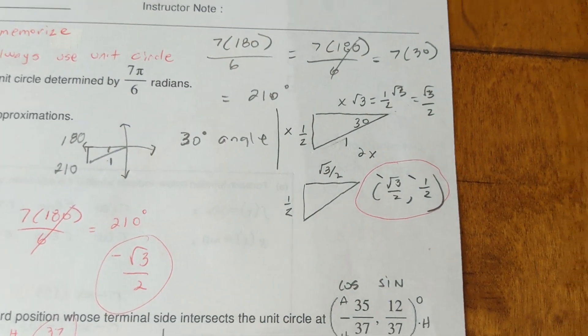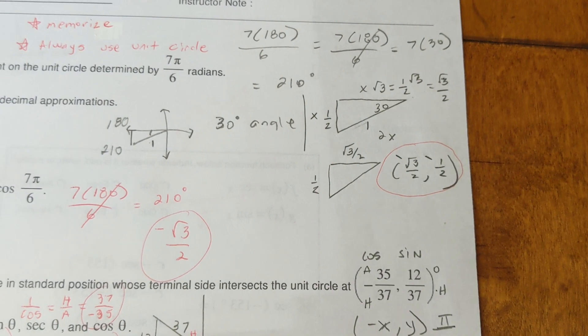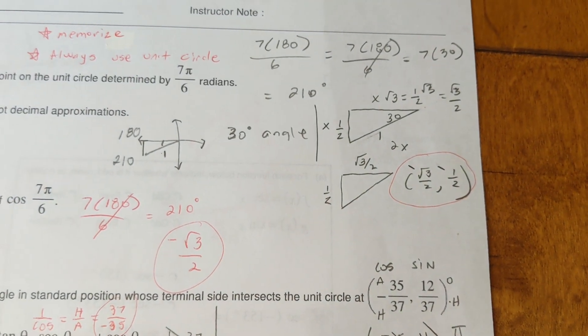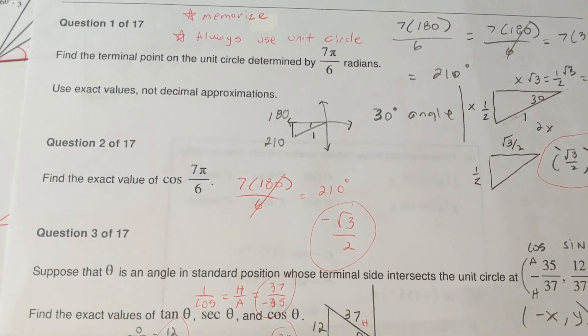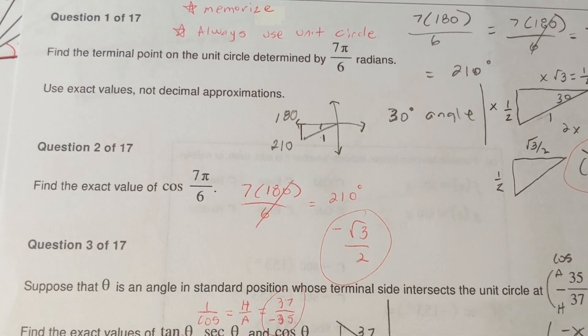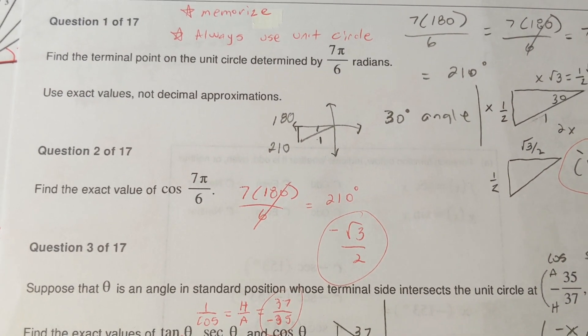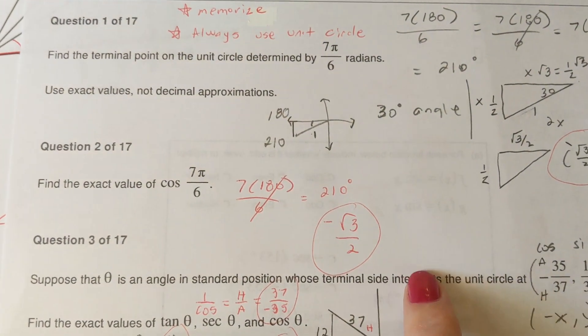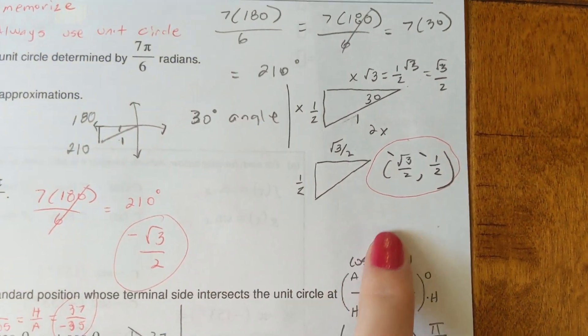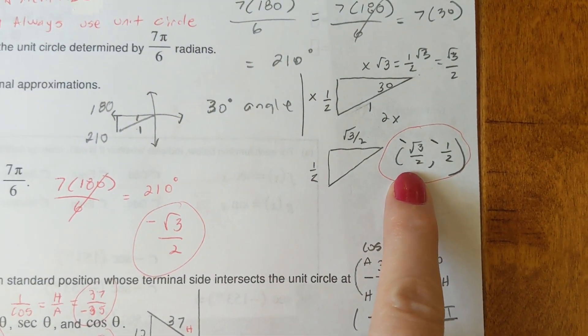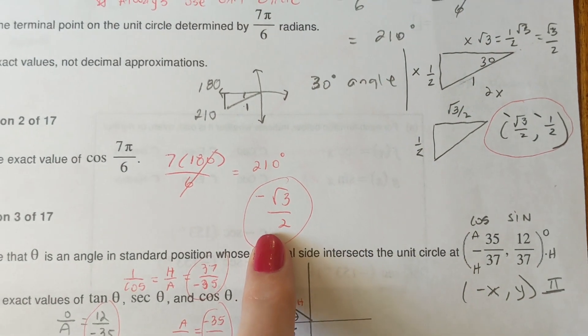And then on the next one, I want to know the exact value of the cosine of 7 pi over 6. So that's the problem that we just did. And so from the problem that we just looked at, the cosine is x, which is negative radical 3 over 2. So it goes right there.